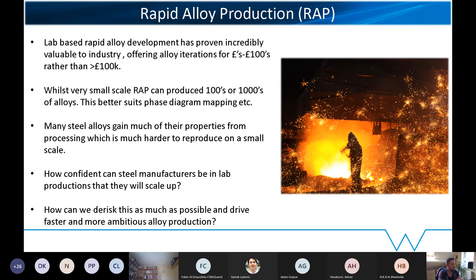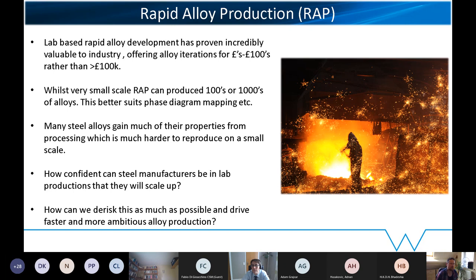Steels are very complicated beasts and a lot of steel's properties come from thermomechanical processing. If you're producing on the gram scale, you can't really reproduce the process it goes through, and therefore you probably can't get the actual microstructures and properties — so there's still quite a lot of risk when scaling up. The question is: how can we reduce this risk? Are there alloys that don't need this, or where we need to choose intermediate levels?